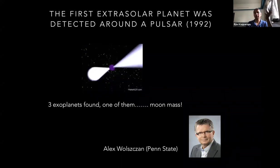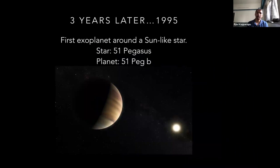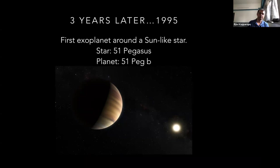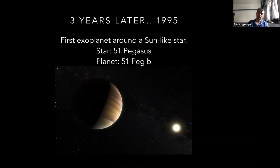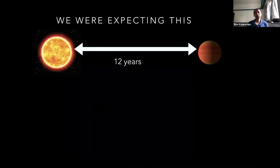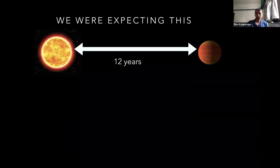Three years later, in 1995, more observations of sun-like stars led to the first exoplanet discovered around a sun-like star. It's called 51 Pegasi, and the planet is called 51 Pegasi b. We were looking for planets around sun-like stars, and we found a Jupiter-sized planet around a sun-like star — fantastic, that's exactly what we were looking for. A Jupiter-sized planet in a 12-year orbit around a sun-like star. But we found something very different.